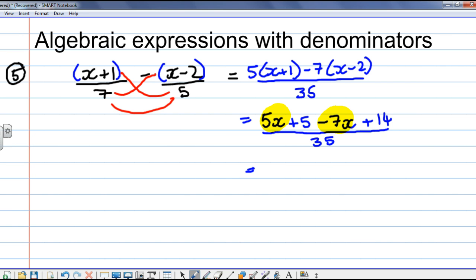And finally, gather together the x's on the top, we've got minus 2x. And gather together, simplifying the numbers, plus 5 plus 14 is plus 19. So, the answer is minus 2x plus 19. Or better still, the convention is, we're always trying to start with a positive term. So, 19 minus 2x over 35. Okay, thank you for listening.